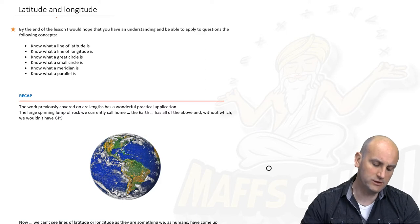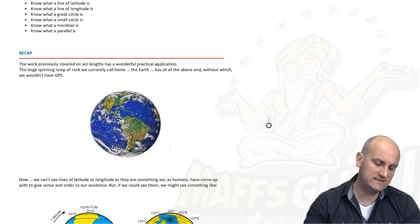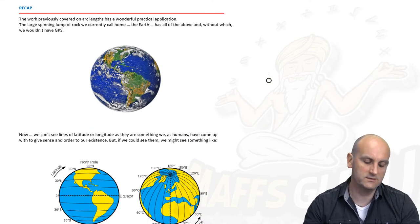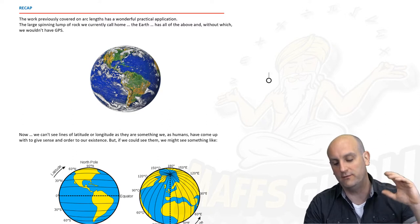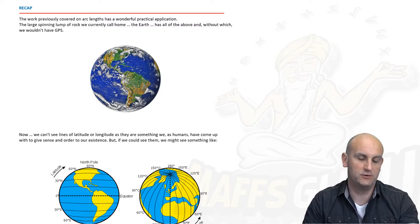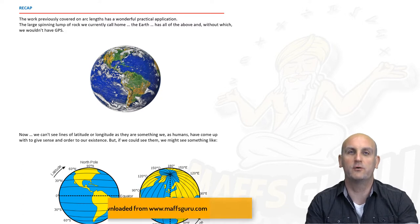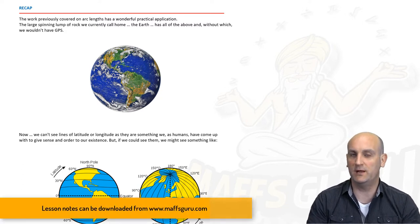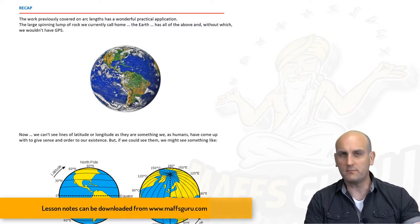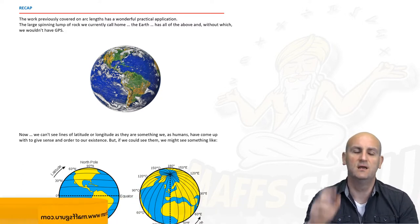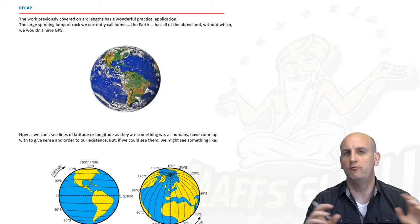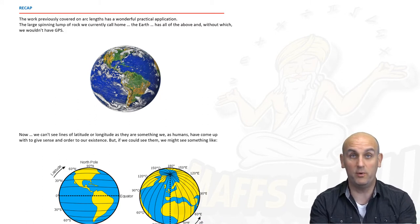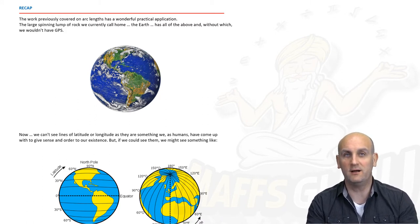Latitude and longitude. In a previous video we looked at arc lengths, and believe it or not there is a wonderful practical application of arc lengths — this huge lump of rock we are currently spinning on. We can find distances between one point and another around the edge of circles, and that's the whole point of finding arc lengths.